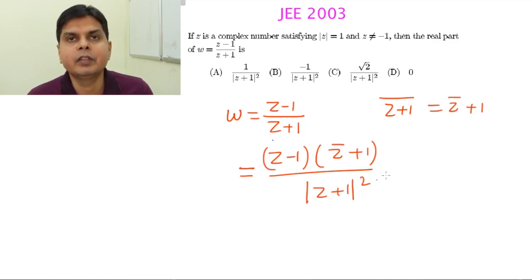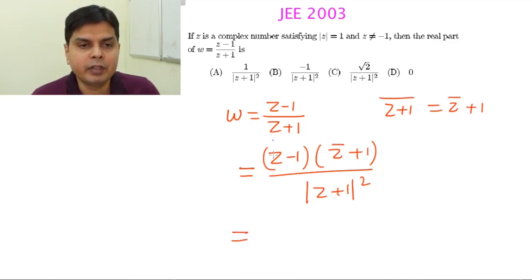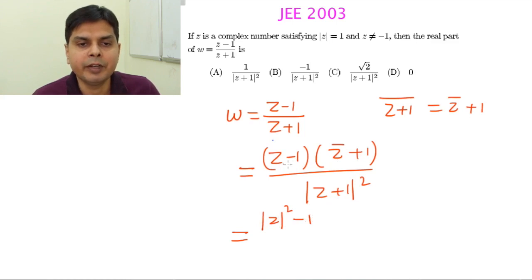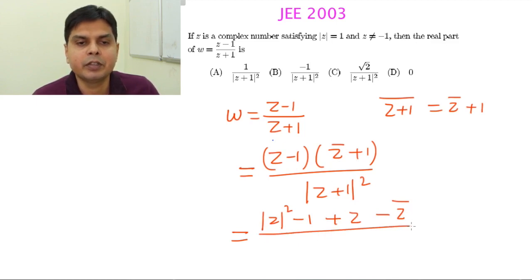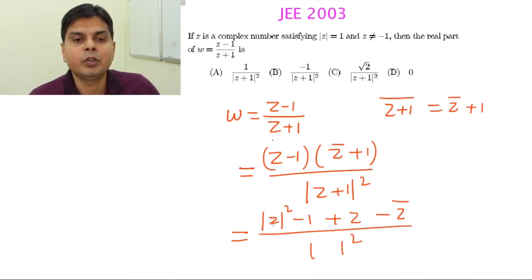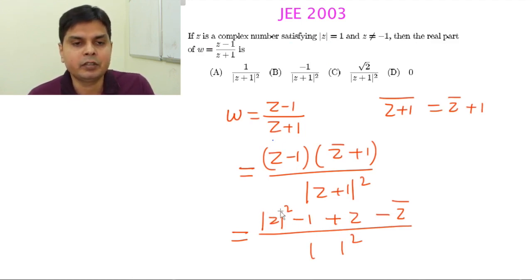Now let's work with the numerator. When you multiply, Z times Z conjugate gives mod Z squared, then minus 1 times minus 1 gives minus 1, plus Z minus Z conjugate, all divided by the modulus square. Since it is given that modulus Z equals 1, mod Z squared equals 1, so those two terms cancel out.